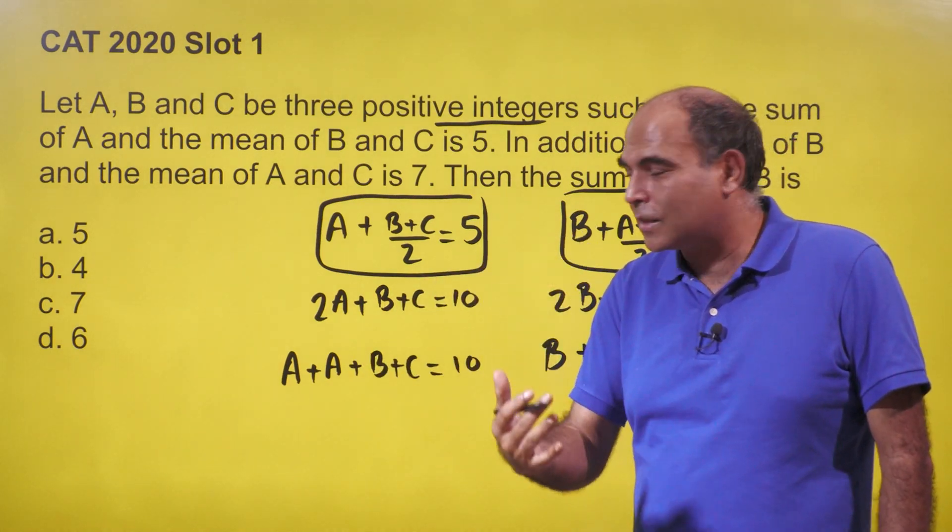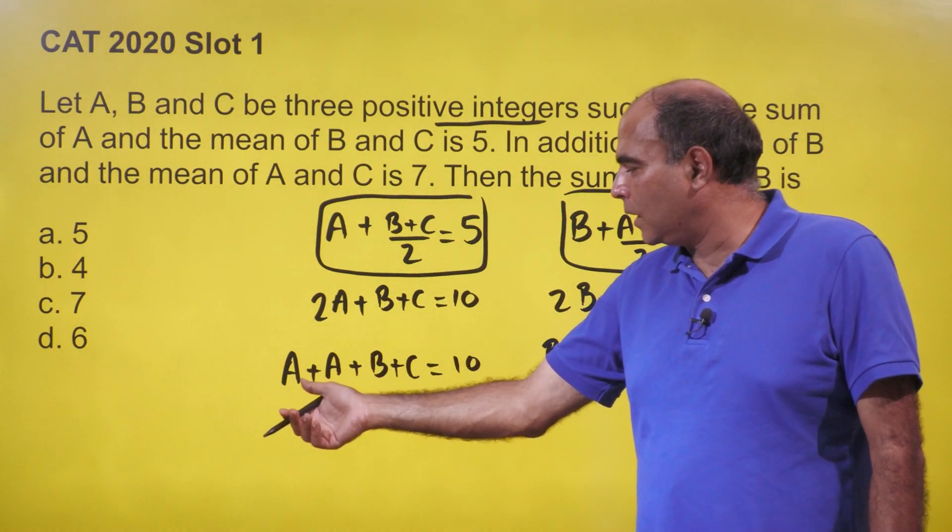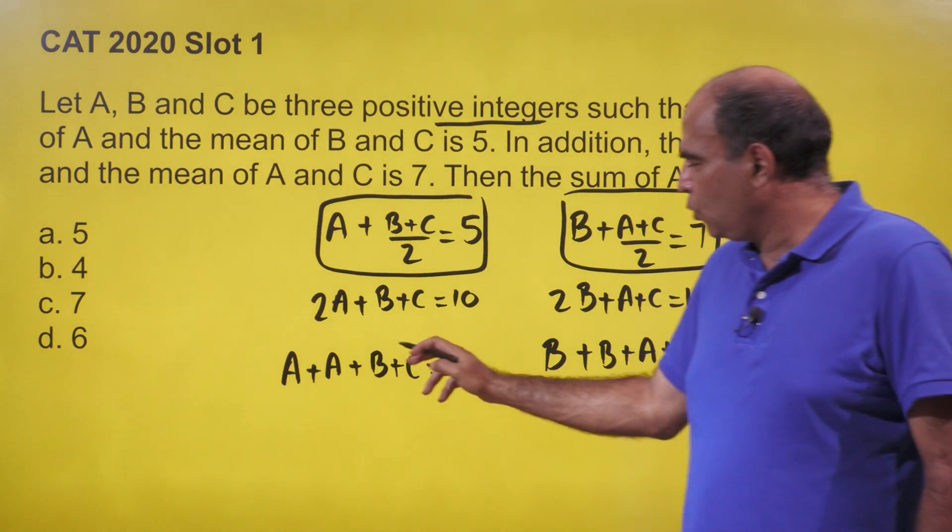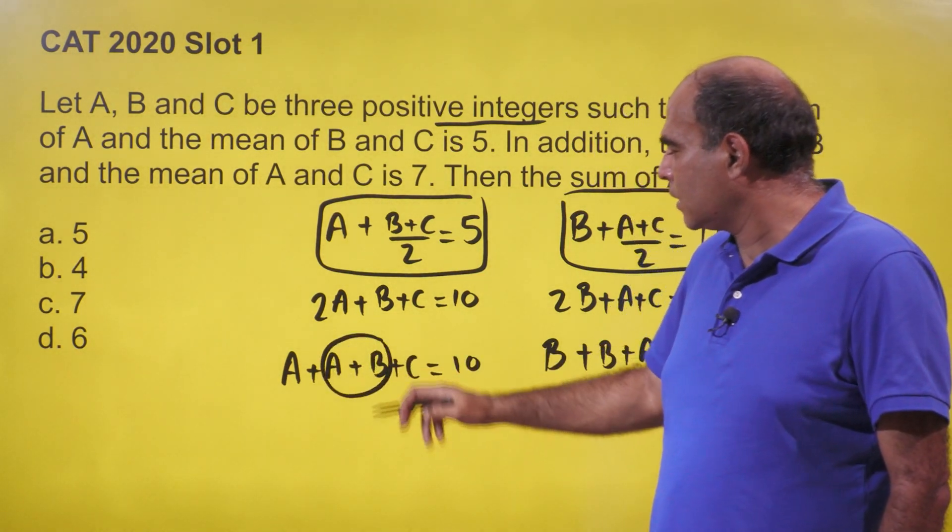The critical insight that makes this a 60-second question is to split these equations in the right form. Once you do that, you have a component of A + B inside the equations.